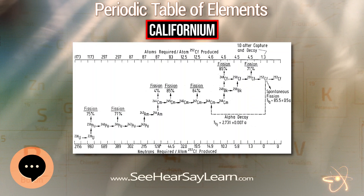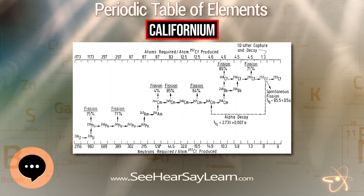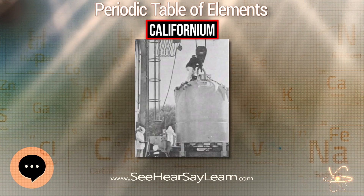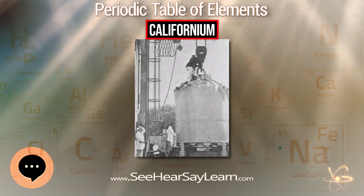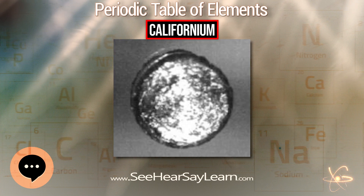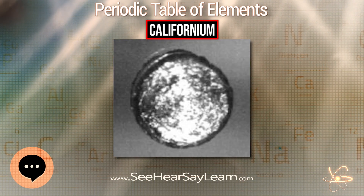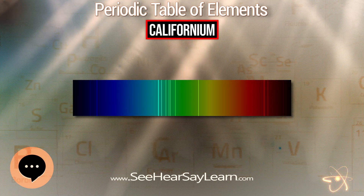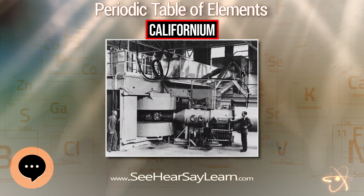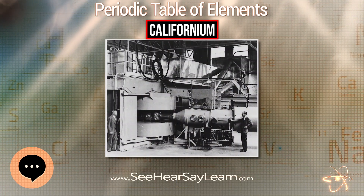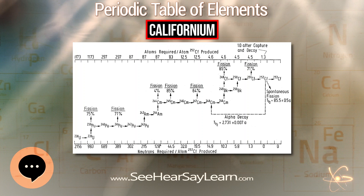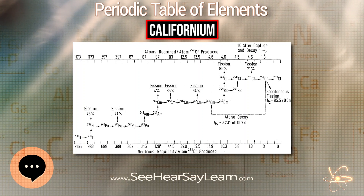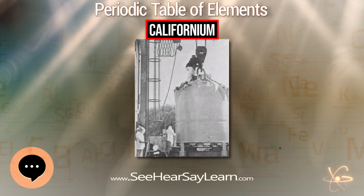Californium-251 has a very small calculated critical mass of about 5 kg, high lethality, and a relatively short period of toxic environmental irradiation. The low critical mass of californium led to some exaggerated claims about possible uses for the element. In October 2006, researchers announced that three atoms of oganesson had been identified at the Joint Institute for Nuclear Research in Dubna, Russia, as the product of bombardment of californium-249 with calcium-48.